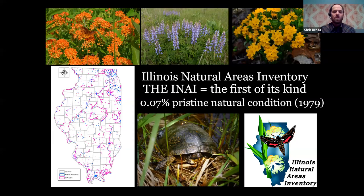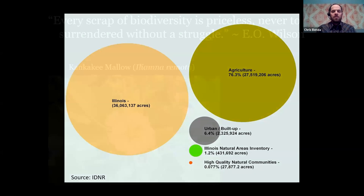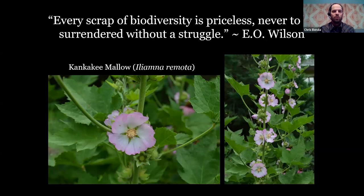Illinois has 36 million acres; 76% of that is in agriculture, a large amount is urban land, and that little red circle represents the 0.077% of high-quality natural communities known in the state in 1979. As E.O. Wilson said, 'Every scrap of biodiversity is priceless, never to be surrendered without a struggle.' We have our beautiful and rare Kankakee Mallow, unique to Illinois — a wildflower successfully brought back from the brink of extinction — as an example of what we can protect.